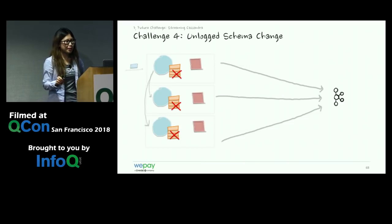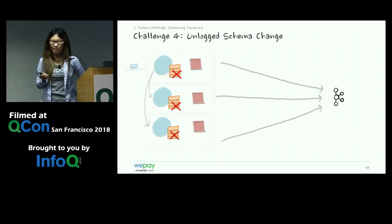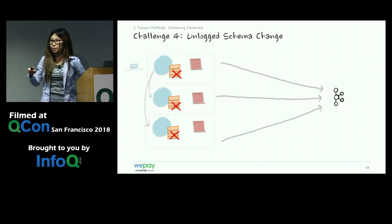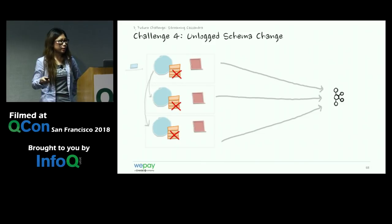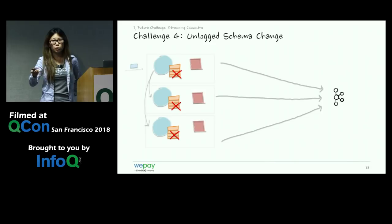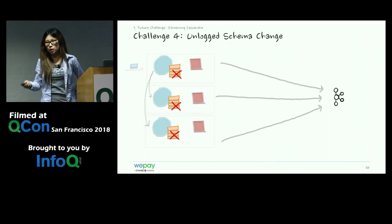The fourth problem is untracked schema changes. Cassandra uses gossip protocol to propagate schema changes — a completely different read/write path from data change events — so schema changes are never recorded in the commit log. If we only listen to the commit log, we won't know about any schema changes.